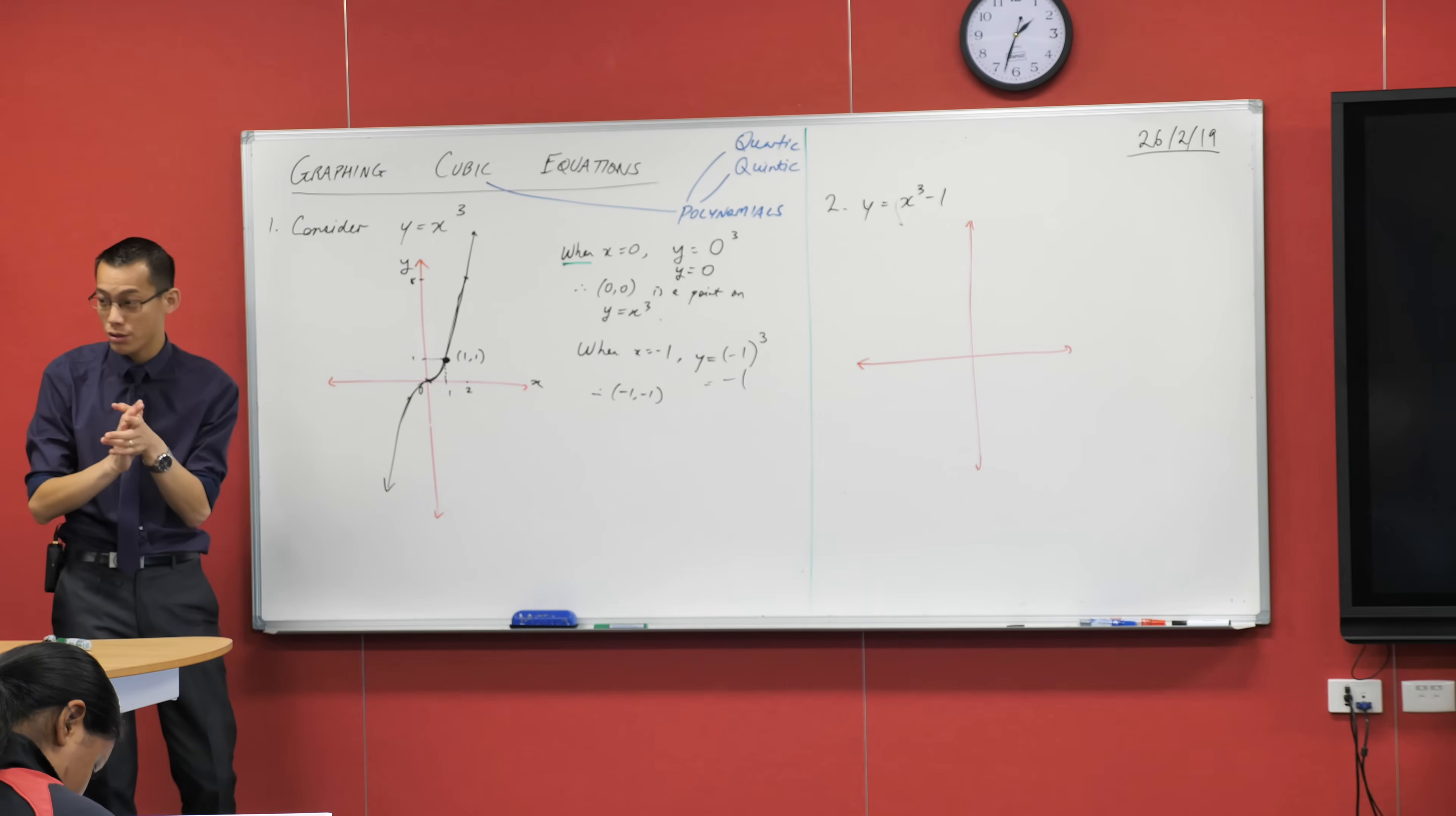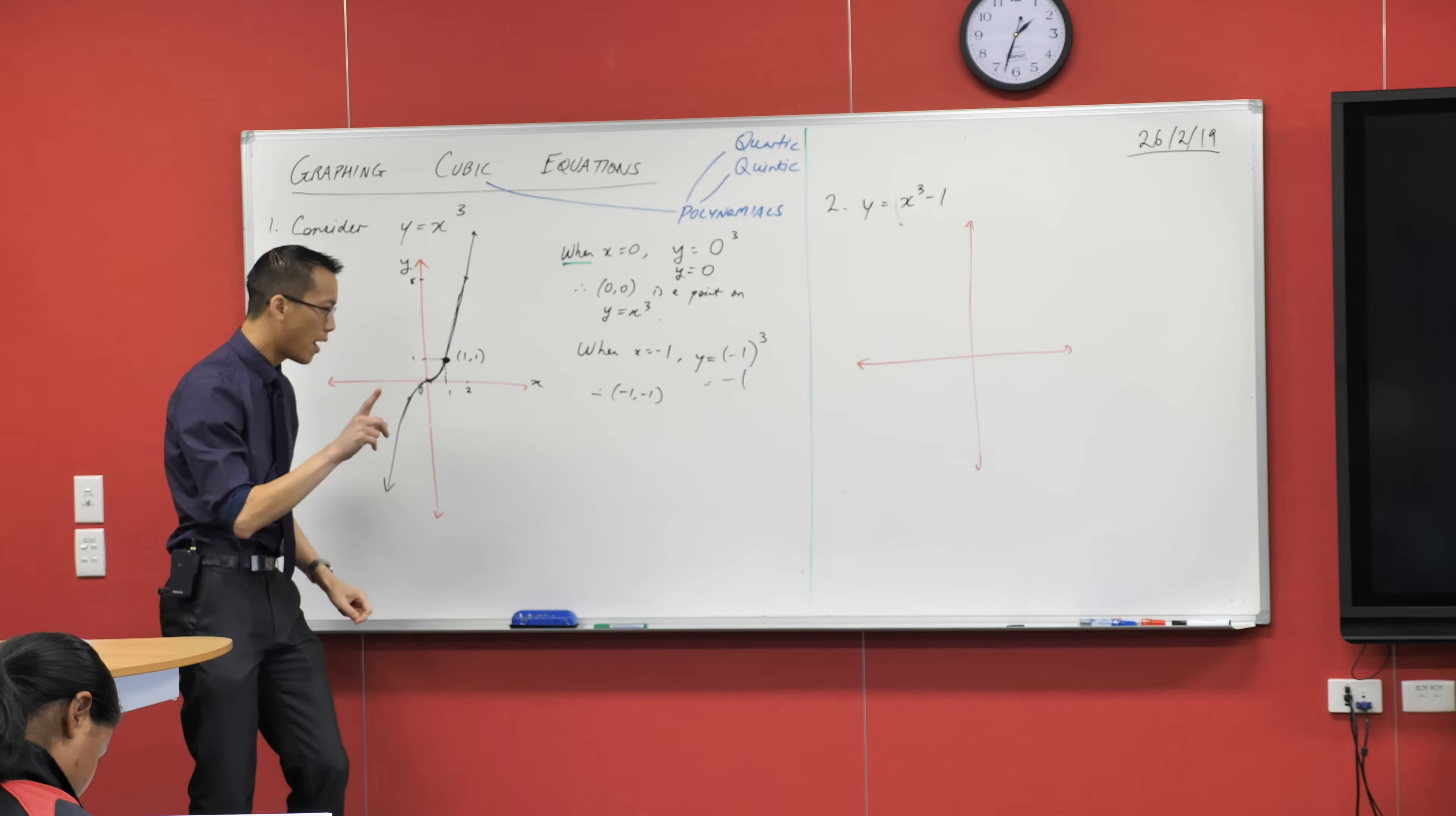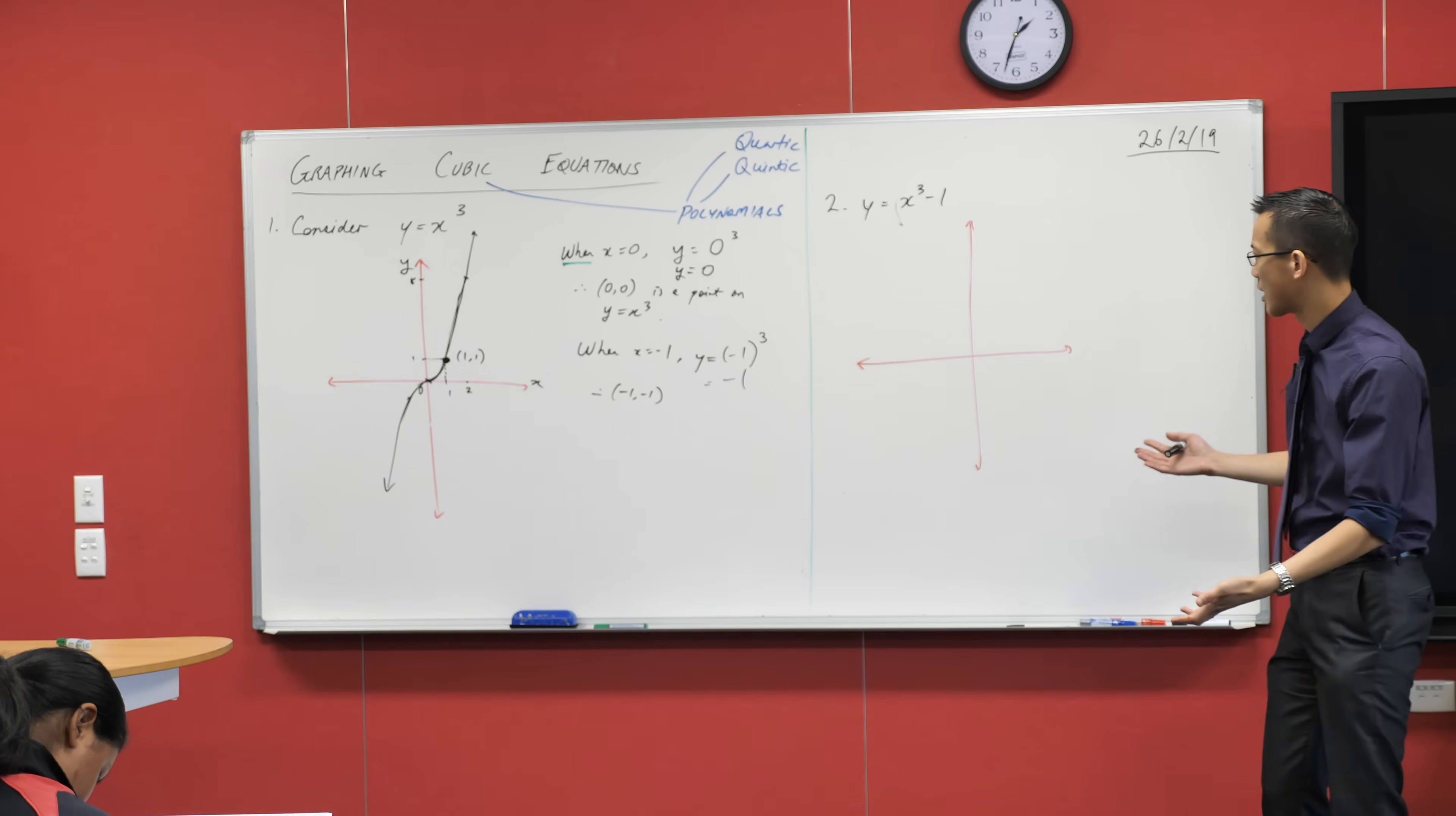So in some senses what I could do is I could just take this shape and redraw it all over again over here. And in some senses that will be what I do, but I want to think about this through the lens of how we did this before. Before we started looking for intercepts, right?